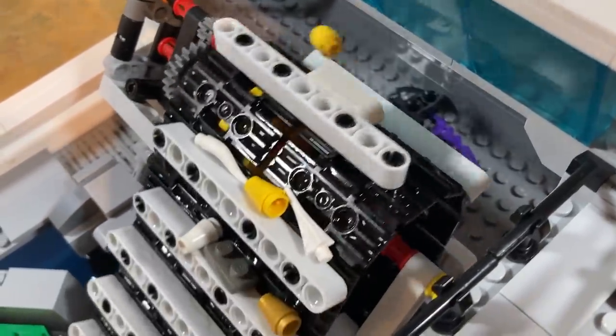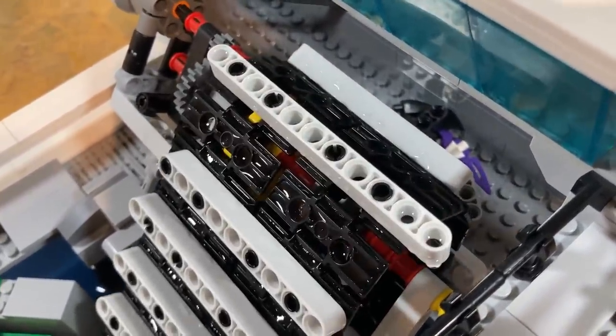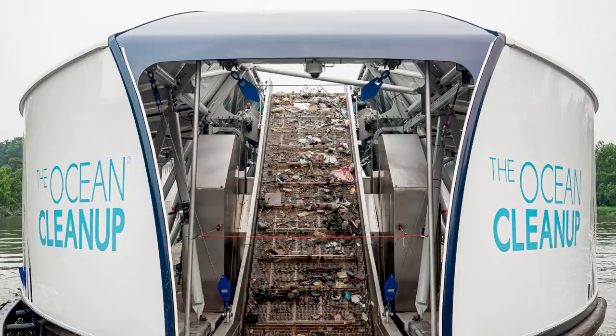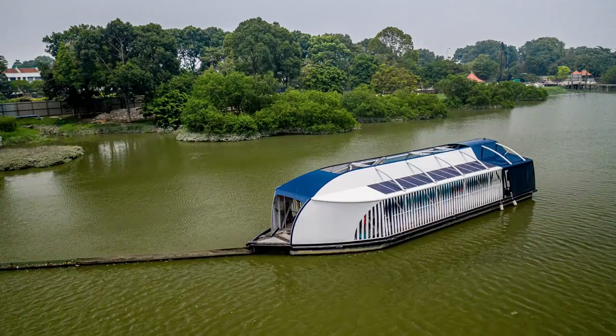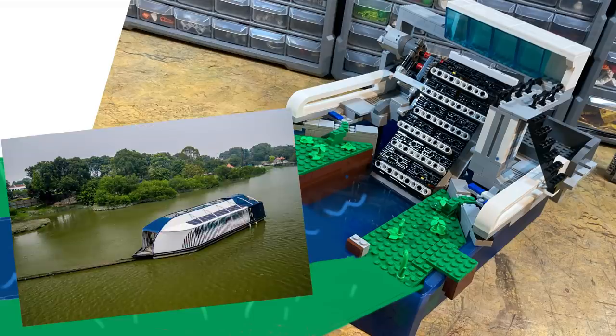The machine would then dump the trash off the conveyor belt and onto a large collection tray where it could be recycled. There is actually a real-life model like this that revolves around the same idea, and it's really cool. The main difference being that my design is located directly at the mouth of the river, whereas the Interceptor, the real-life model, is implemented somewhere within the river.